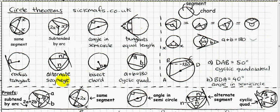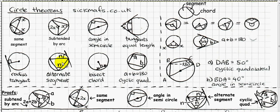This one is called the alternate segment theorem: the angle in one segment equals the angle in the alternate segment. An angle in a segment is automatically at the circumference, and alternate means the other segment. Another way to look at it: the angle touching a chord equals the angle opposite that chord. This is a tangent here, forming the boundary.